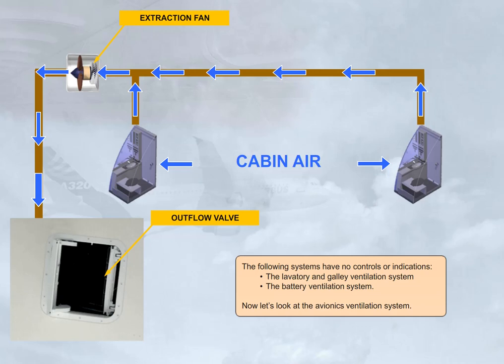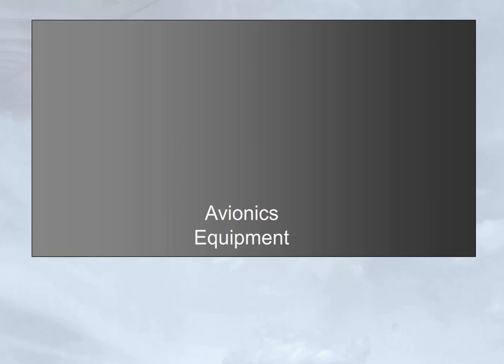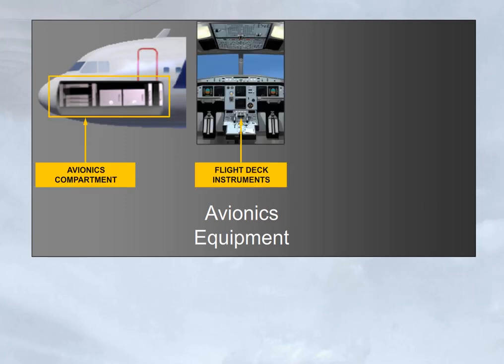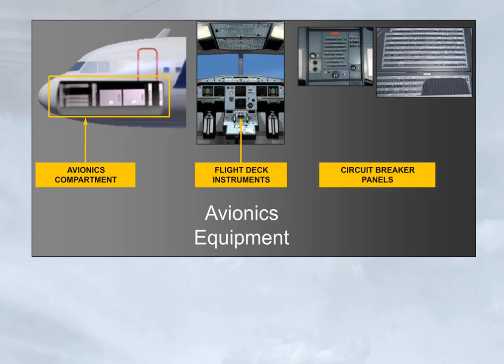The following systems have no controls or indications: the lavatory and galley ventilation system, and the battery ventilation system. The avionics ventilation system provides cooling air for the avionics equipment. This equipment includes the avionics compartment, the flight deck instruments, and the circuit breaker panels.